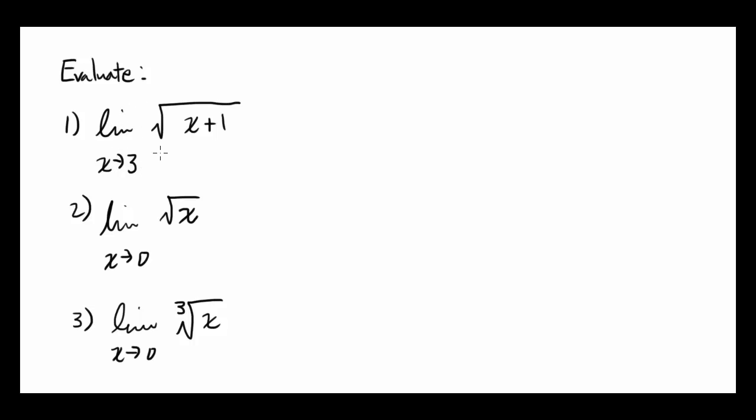Limit as x approaches 3 of square root of x plus 1. In the case of a radical, you gotta plug the value into it. In this case, it's going to be square root of x, which is 3, plus 1. And that's going to be square root of 4, which comes out to be 2. So this was an easy one.